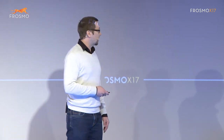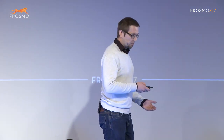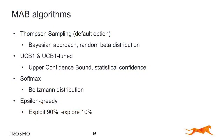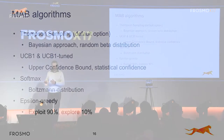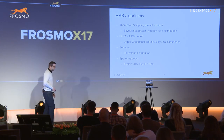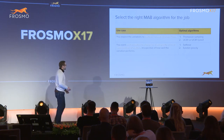The last and simplest algorithm is Epsilon Greedy. You exploit 90% of the time — showing the best-performing content — and the remaining 10% you explore the other arms, trying out other pieces of content.